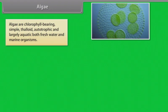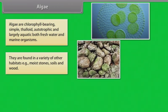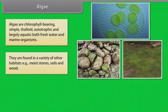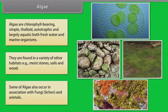Algae are chlorophyll-bearing, simple, thalloid, autotrophic and largely aquatic both freshwater and marine organisms. They are found in a variety of other habitats as well, example moist stones, soils and wood. Some of algae also occur in association with fungi, lichen and animals.